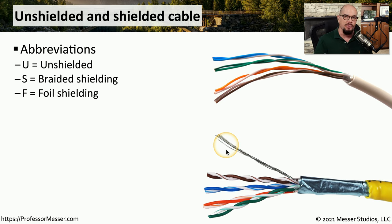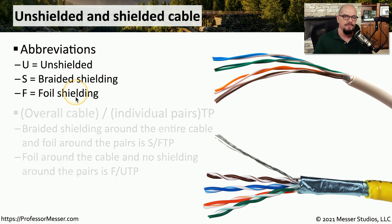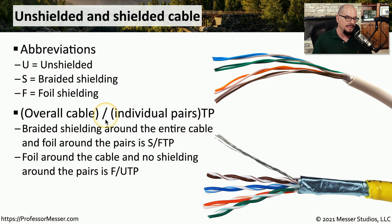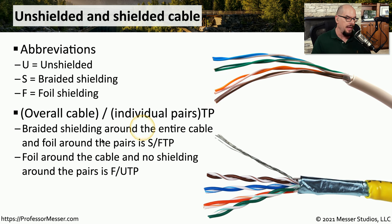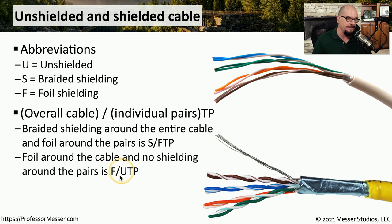If you look at the outside of the cable, you'll see abbreviations that describe how it is constructed. U means unshielded twisted pair, S means braided shielding, and F refers to foil shielding. We write this as the overall cable, a slash, the individual pairs, then twisted pair. So if the overall cable has braided shielding and the individual pairs have foil shielding, you'd write S/FTP. If there's foil around the cable and no shielding on the pairs, you'd write F/UTP.